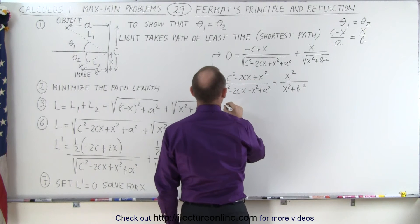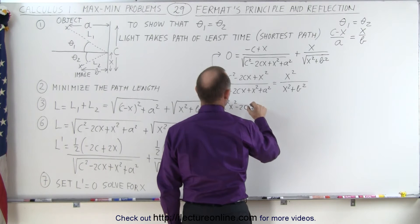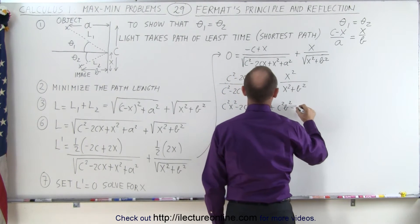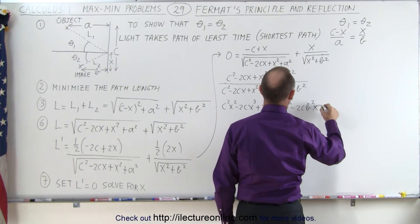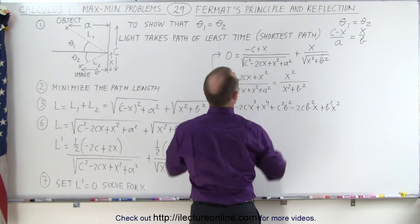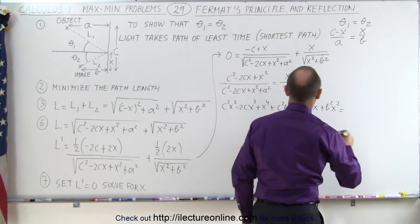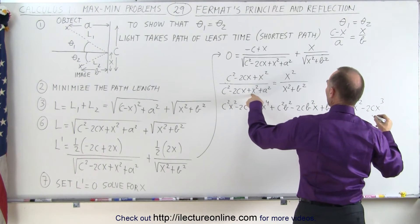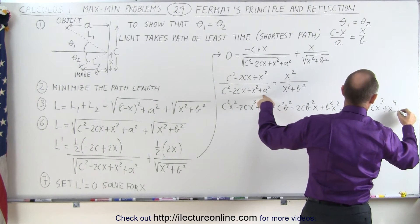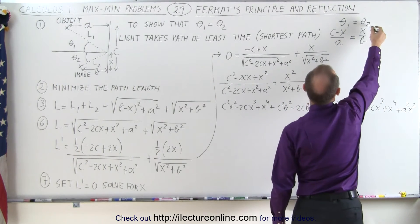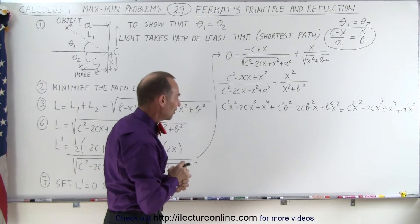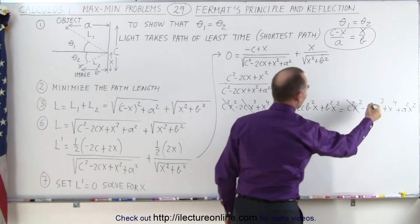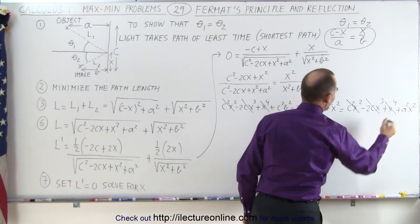On the left side, multiplying out: c squared x squared minus 2cx cubed plus x to the fourth, then multiplying b squared by the numerator gives plus c squared b squared minus 2cb squared x plus b squared x squared. Setting that equal to the right side: c squared x squared minus 2cx cubed plus x to the fourth plus a squared x squared. We have a c squared x squared on both sides — that cancels. The minus 2cx cubed cancels. The x to the fourth cancels. Suddenly it doesn't look that bad anymore.